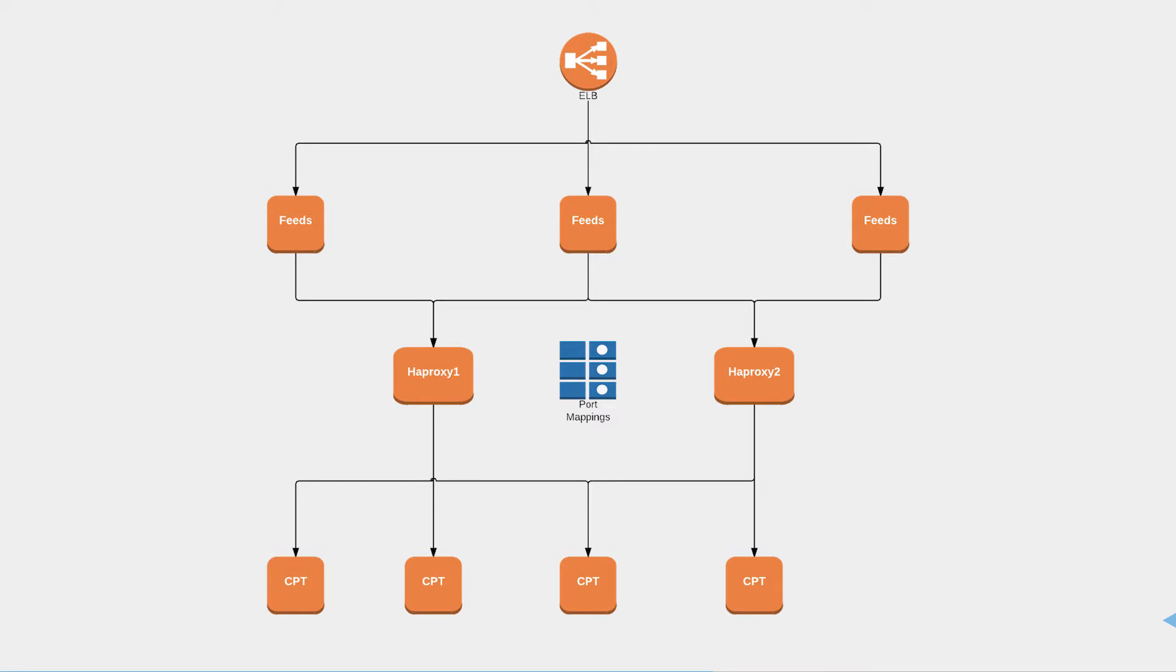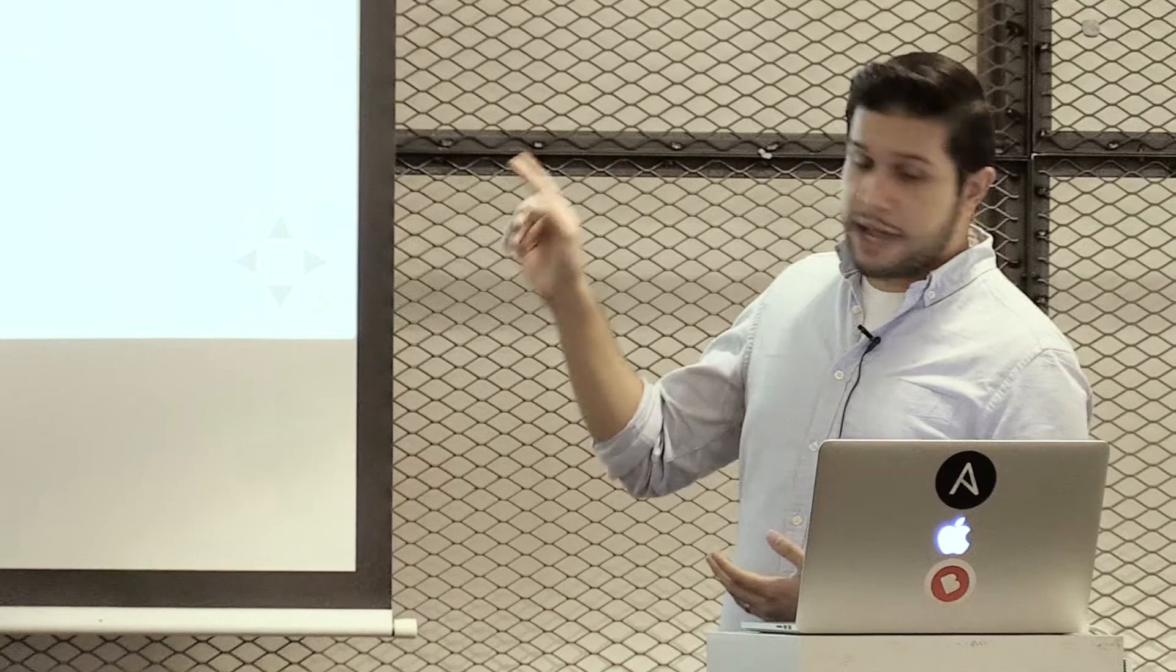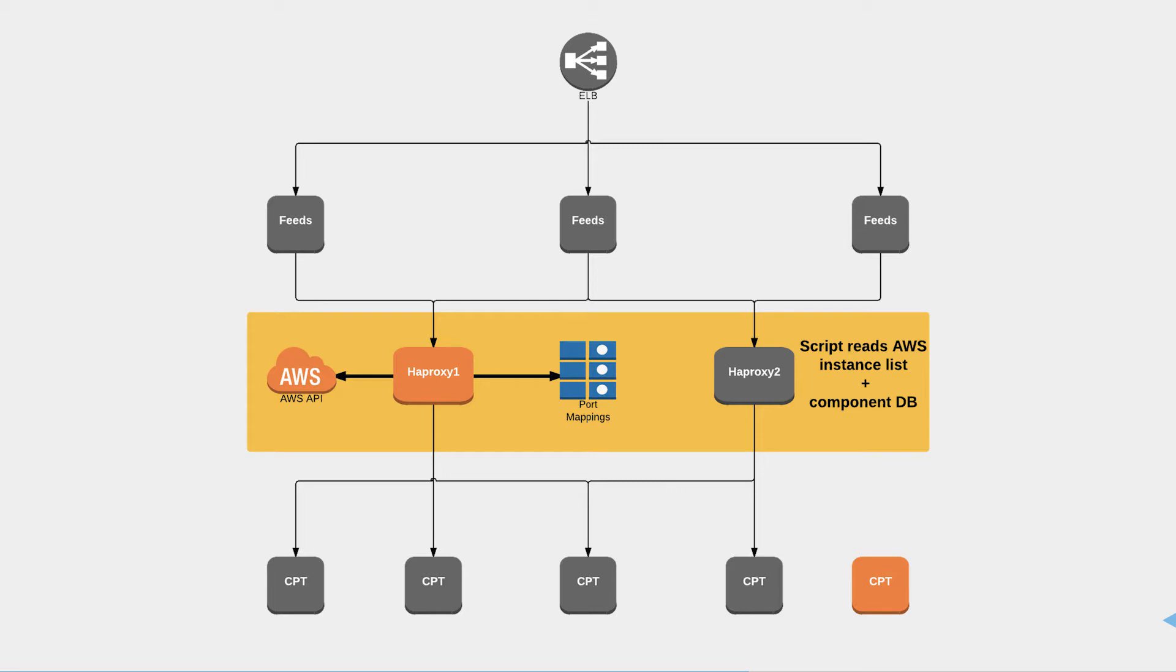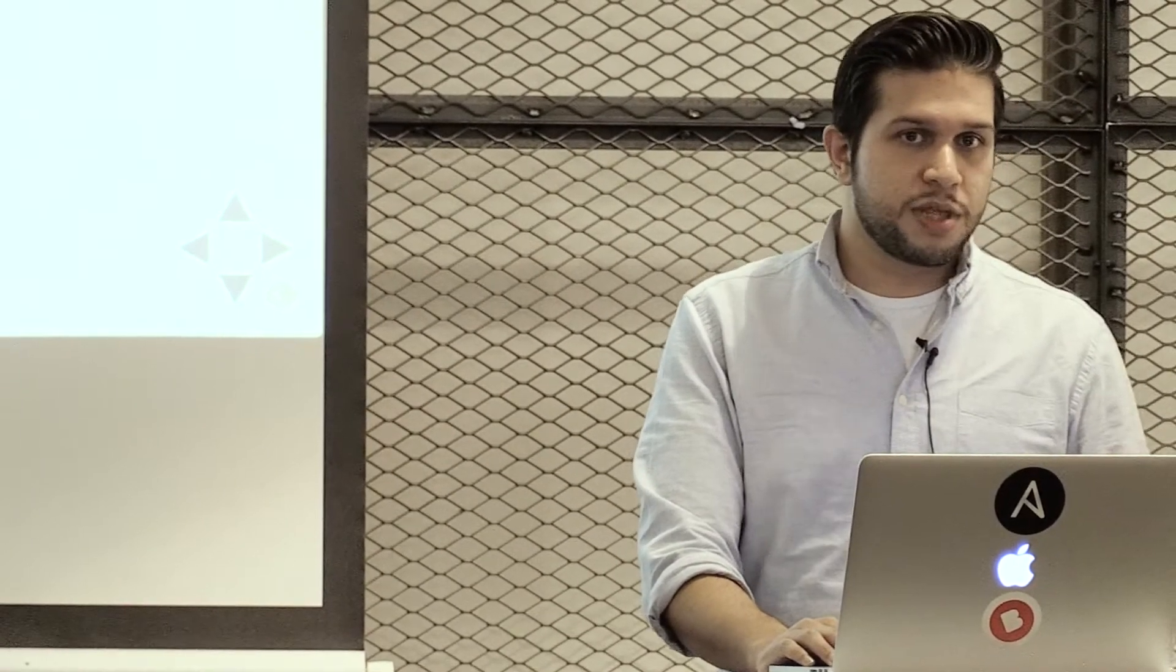Sounds pretty complicated, but it's been working and still does. So let's take a look at how it works. In this architecture, same components, feeds and CPT, but this time we've got HAProxy nodes. So when a new node comes up, the script runs, it checks the database, checks the Amazon API, finds the new node, writes the new configuration to disk and restarts HAProxy, which brings that new node into service. This happened within a minute or two tops. So without any hands-on work, the new node was up and running and serving traffic.